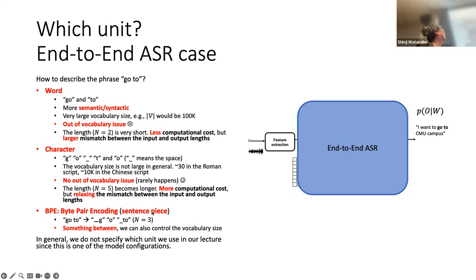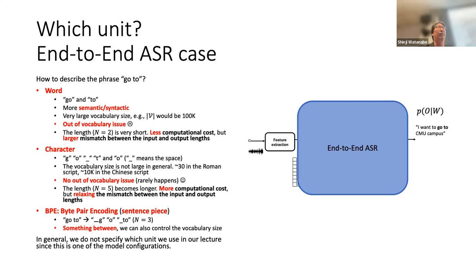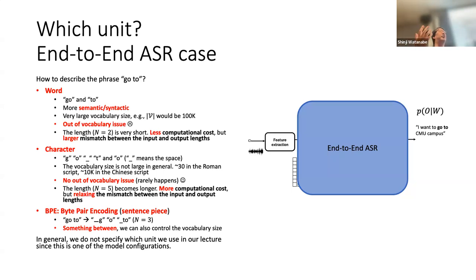In practice, most people use subword, which is the most common. For Chinese and Japanese, many people use character. Word is very useful for HMM-based systems because words usually have corresponding pronunciations that connect to the phoneme-based system. The choice of output unit is a hyperparameter depending on language, training data, and computational cost.